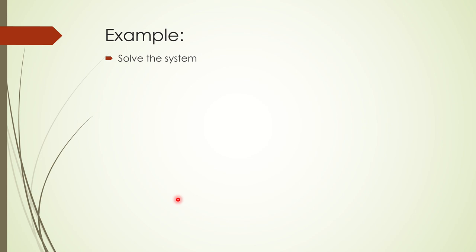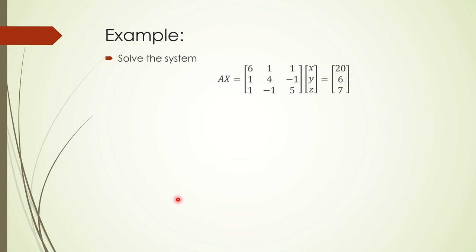Let us work an example. We have the system Ax = b where A = [6, 1, 1; 1, 4, -1; 1, -1, 5] and b = [26; 6; 7] (variables x, y, z). First, check diagonal dominance: row one: |6| > |1|+|1| = 2 ✓; row two: |4| > |1|+|-1| = 2 ✓; row three: |5| > |1|+|-1| = 2 ✓. So this matrix is diagonally dominant and the Jacobi iterations will converge.